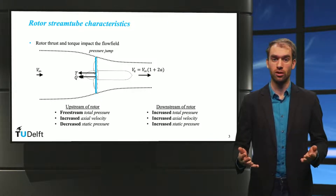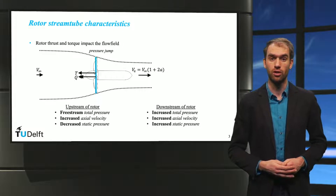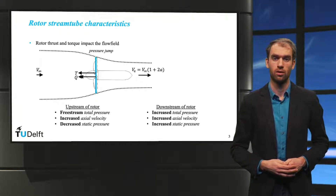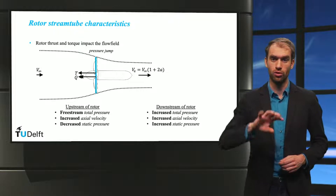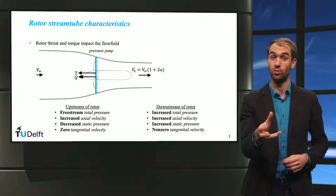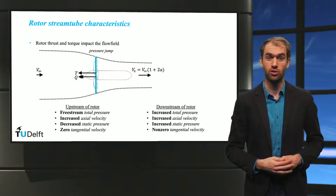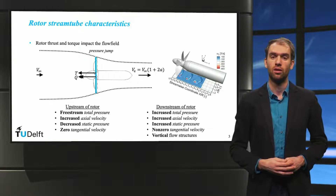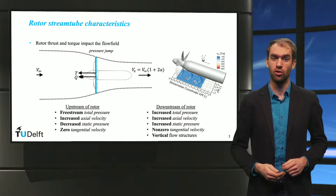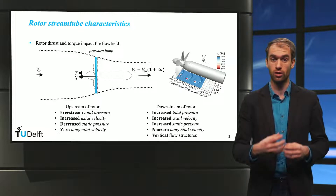The increase in velocity induced by the rotor causes a contraction of the stream tube. Because of the rotor torque, there is also a non-zero tangential velocity component in the slipstream. Finally, the slipstream contains the rotor blade wakes and tip vortices. The contours of vortices shown in the top right of the slide highlight the time dependency of the flow field in the rotor slipstream.